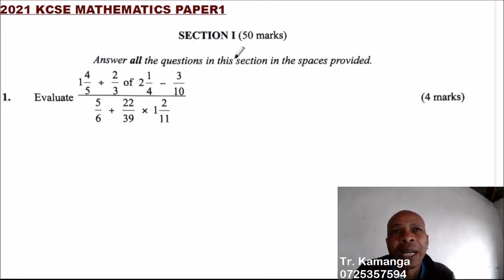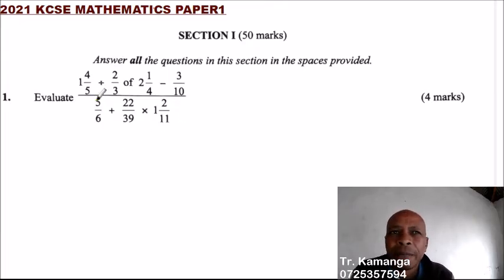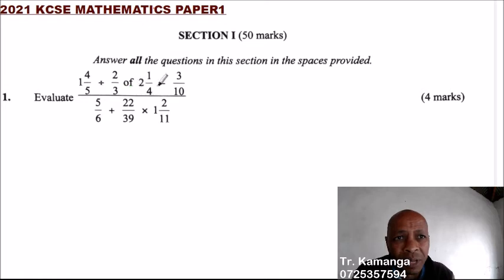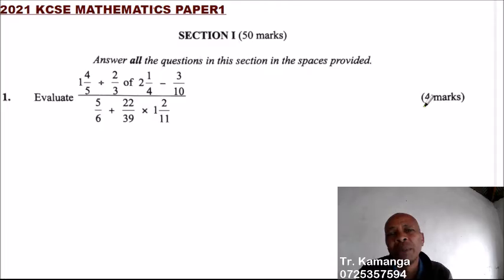Section 1 consists of 16 questions, which are composite, and you are supposed to do the questions on the spaces provided. This is question 1. If you get to the final answer, you should be able to get 4 marks.